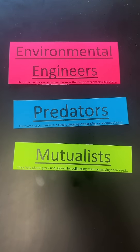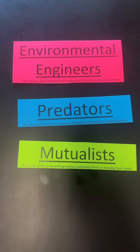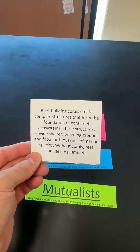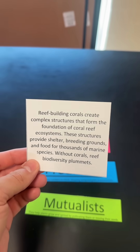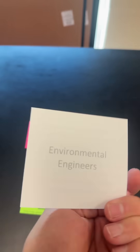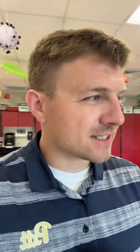In this example, there are three different types of keystone species. In this organizer, students read different examples of these types and try to figure out what the example is showing. Here are all the cards the students have to work through.